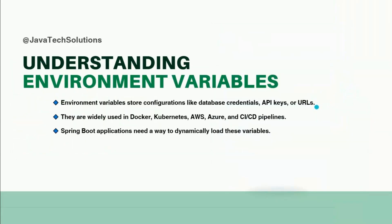Before jumping into the new feature, let's understand what environment variables are and why they matter in Spring Boot. Environment variables store configurations like database credentials, API keys, and URLs. These values vary from one environment to another. They are widely used in Docker, Kubernetes, AWS, Azure, and CI/CD pipelines. Spring Boot applications need a way to dynamically load these variables.